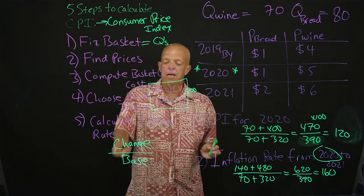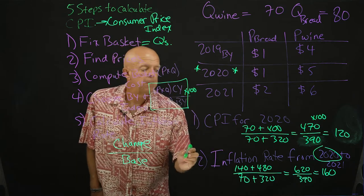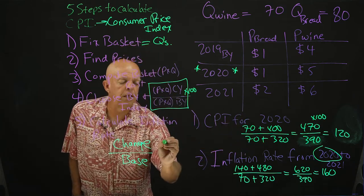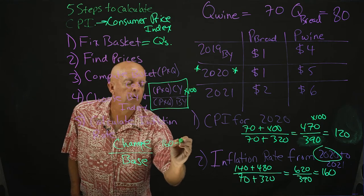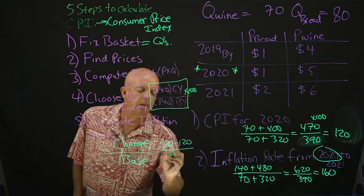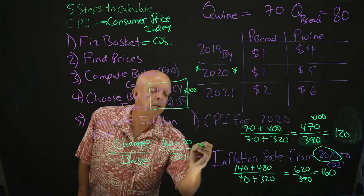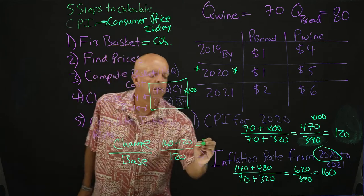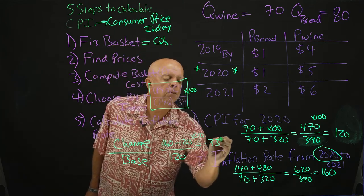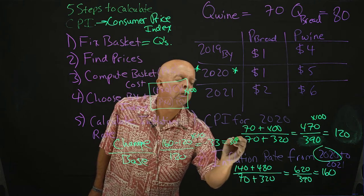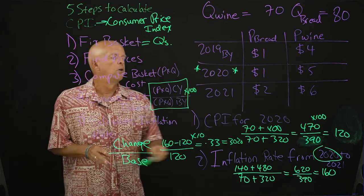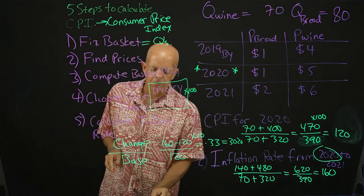To get the inflation rate, it's the change over the base. The change would be 160 minus 120 over the base, which is 120. This number is going to be 0.33 times 100, gives us 30% change in prices from 2020 to 2021.